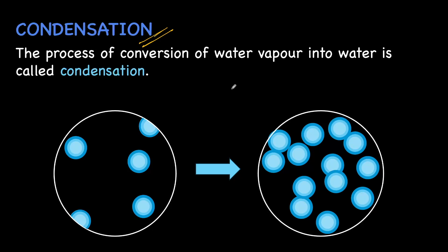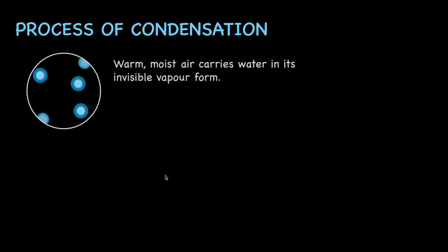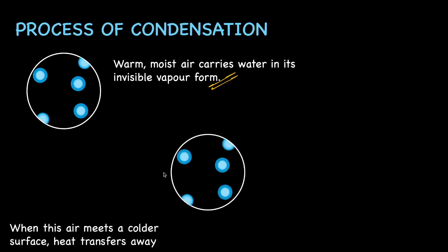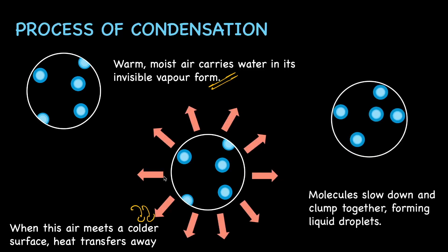Condensation can be defined as the process of conversion of water vapor into water. Effectively, what happens during this process is that warm, moist air carries water in its invisible vapor form. When it comes in contact with a colder surface, the heat starts to transfer away from the vapor molecules. As a result, the molecules slow down and clump up together, forming liquid droplets.